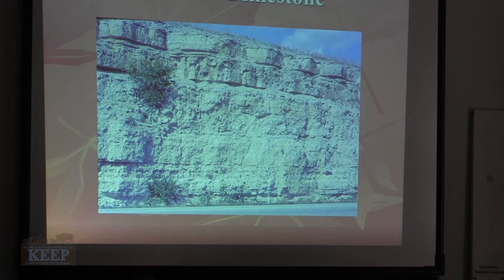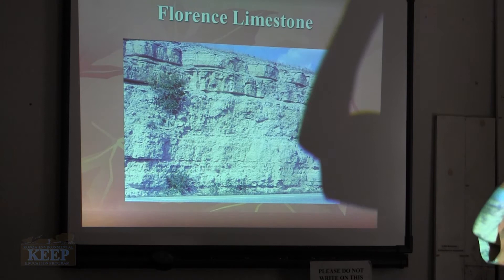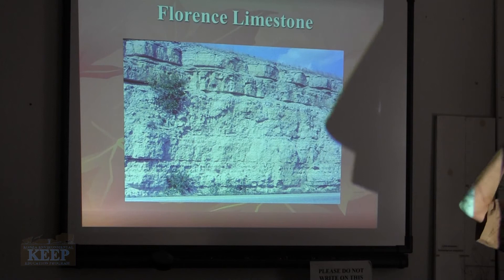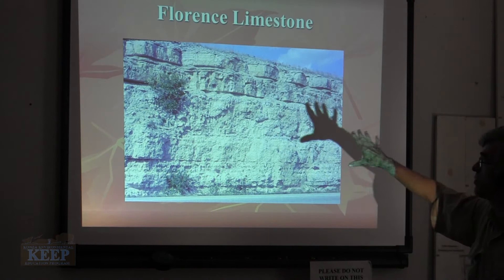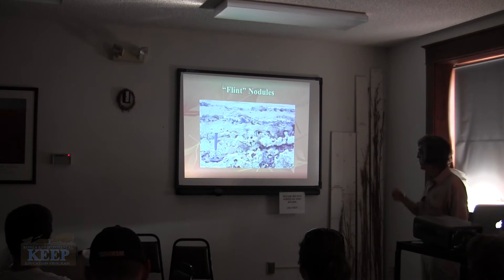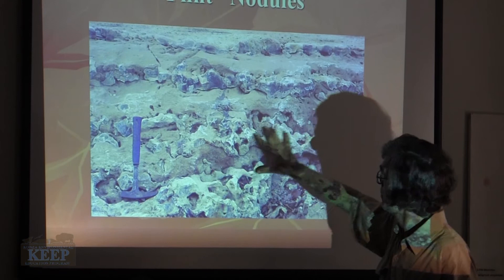Looking at this picture — is all of that the Florence? Yes, that's all Florence. It's very thick — several times thicker than any other limestone in the sequence. As a result, it's the most prominent platform. If you drive down the length of the Flint Hills, you're often driving on top of the Florence. Each limestone makes a flat platform, and this is the most prominent one. This image is actually from Milford, but this is Florence too — zoomed in so you get a sense of it.